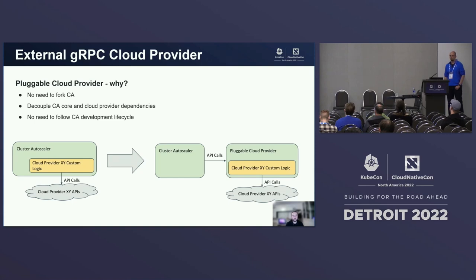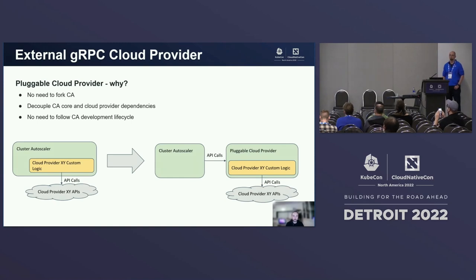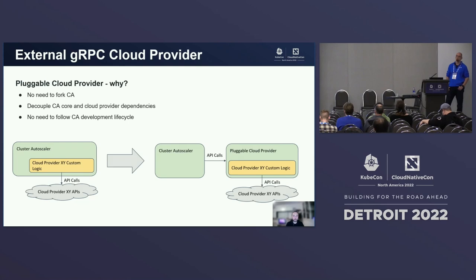Also, you can now release new versions of your cloud provider whenever you want, without waiting for a new official CA release. You can use libraries that you could not use before — for example, because they are not under the Apache license — and you can also use your own language of choice if you want to avoid Golang for some reason.